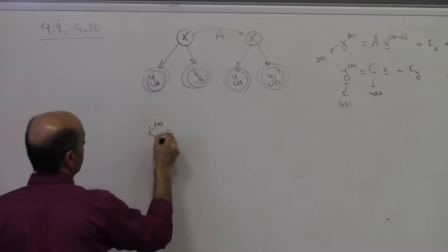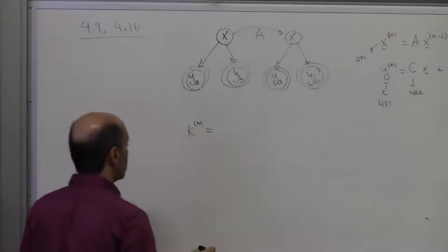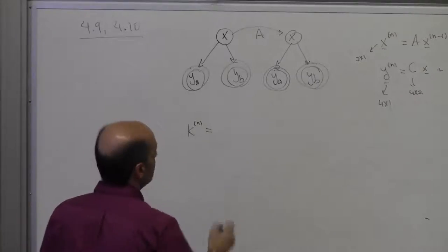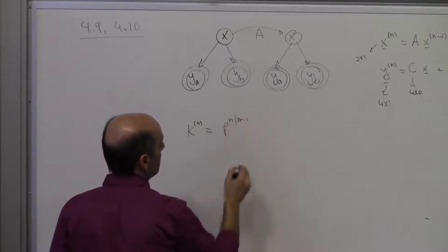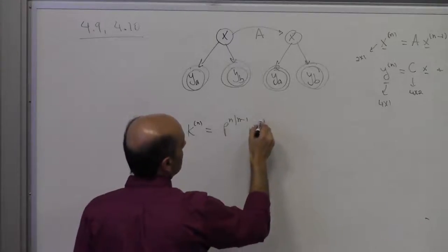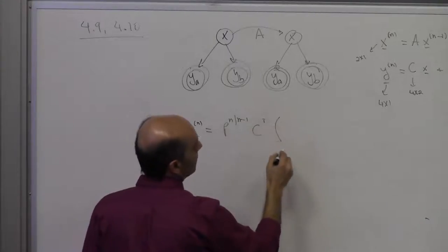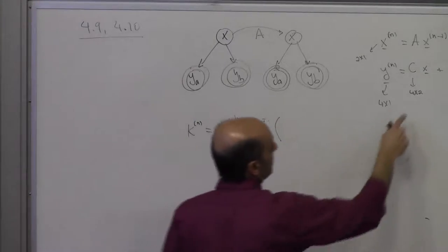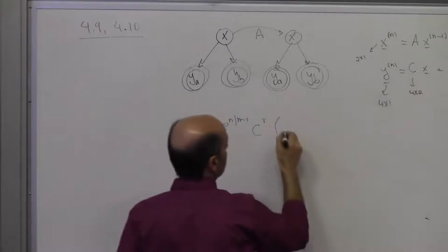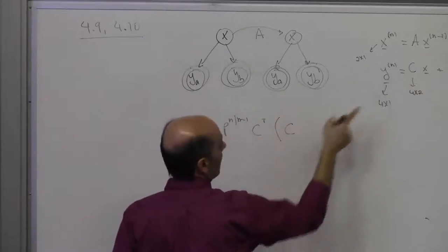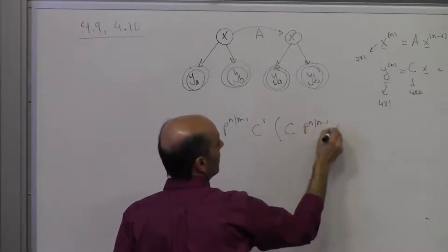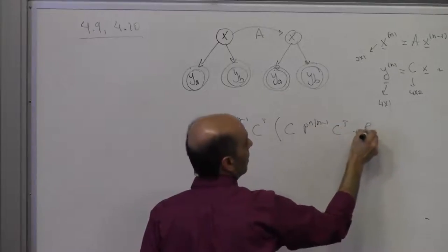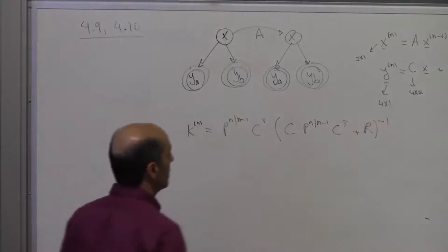From the work we did last lecture, K of N is equal to P(N, N-1) times C-transpose, times the variance of the observation structure — that is, C times P(N, N-1) times C-transpose, plus R — all inverted.